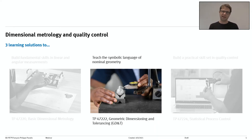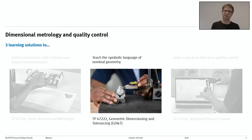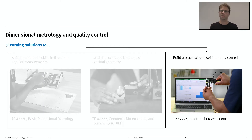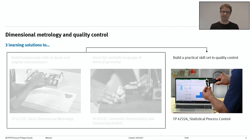Geometric Dimensioning and Tolerancing teaches the symbolic language of nominal geometry. We're dealing with the function of the part — not just the part by itself, but how it's used. The third package, which uses data from the two previous ones, is called Statistical Process Control. It's one of the tools used in quality control, and in this one we build a practical skill set in quality control.